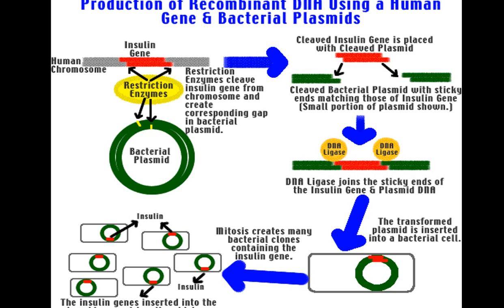Once the insulin gene is separated, you can see the red fragment is cut away from the green fragments — the rest of the human DNA. Now you have a human insulin gene with sticky ends, and the same restriction enzyme is also used for the bacterial plasmid, so you get sticky ends. Once the sticky ends are created, the bacterial plasmid, which is a closed circle, becomes open.